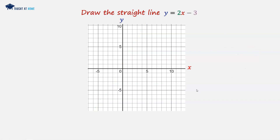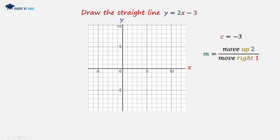Example 2: y equals 2x minus 3. In this case, c is equal to minus 3, and m is equal to 2 again. So just like in the last one, the gradient is the same, so we're moving up 2 and moving to the right 1. Our first point is going to go right here, where y equals minus 3.